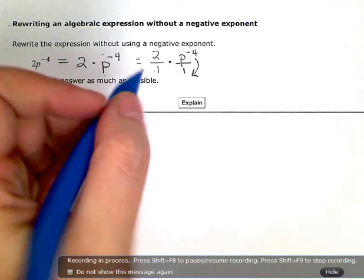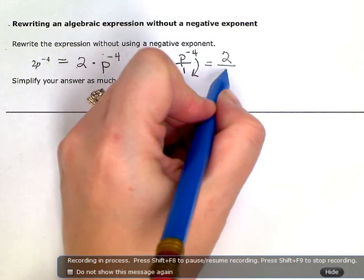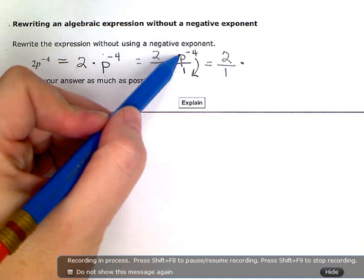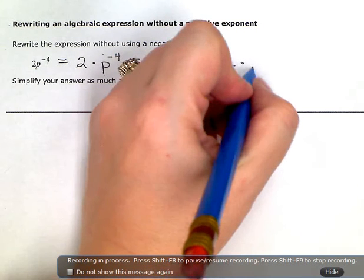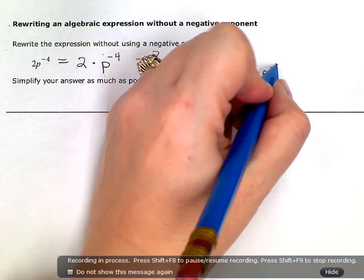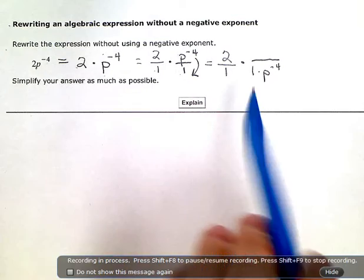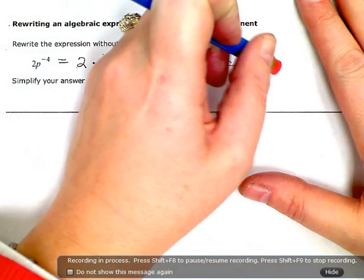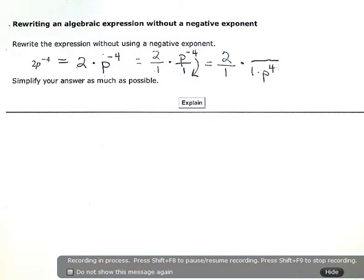So the 2 is just going to stay put. We're not doing anything with that. But this one, if I bring the p downstairs, I have this 1. And then the p - now that he's downstairs, he's happy where he lives with his neighborhood. And so I can get rid of the negative on the exponent. He can be p to the positive 4 exponent. And we'll just put a 1 up there.